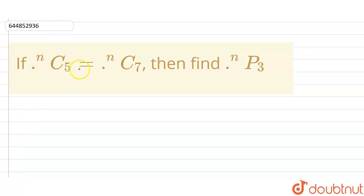Hello friends, here we have given a question that nC5 equals nC7, then find the value of nP3. So first we should know the value of n.